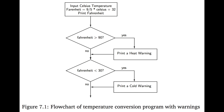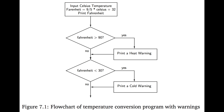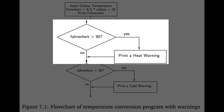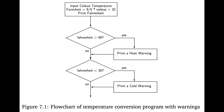Here is a flowchart diagram for the entire program. We start with the original program that inputs the Celsius temperature and outputs the corresponding Fahrenheit temperature. After that, it checks if it's warmer than 90 degrees - if so, it prints a heat warning. Whether or not it was hot, it then checks if it's less than 30 degrees, and if so, prints out a cold warning. Note that only one of these two conditions can be true for a given temperature - it can't be very hot and very cold at the same time.